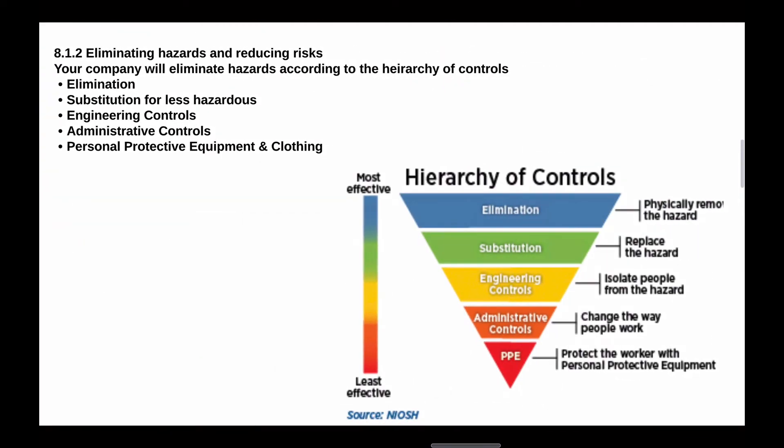Moving to Clause 8.1.2, we're looking at eliminating hazards and reducing OSH risk. A lot of people have asked why this appears here and not in Clause 6. In essence, the hierarchy of controls has already been considered in Clause 6 when you did your risk assessment. But what they're talking about here is they want you to consider the hierarchy of controls on an ongoing basis, applying them to every aspect of your business.